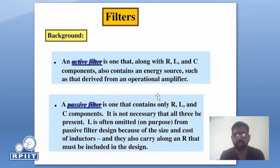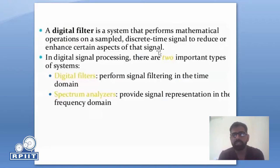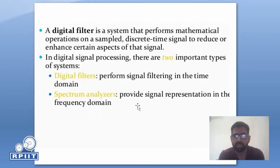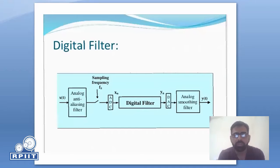Next, we understand the digital filter. A digital filter is a system that performs mathematical operations on a sampled discrete-time signal to reduce or enhance certain aspects of the signal. In digital signal processing there are mainly two types of systems: digital filter and spectrum analyzer. The digital filter performs signal filtering in the time domain, while the spectrum analyzer provides representation in the frequency domain.